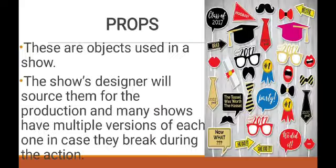These are some of the objects used in the show. See the picture on the right-hand side — some of the objects are a tie, specs, glasses, and lips. These are some of the properties used in their show. During the action, these properties can be used by the actor or actress.